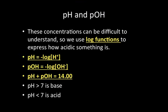Sometimes the large numbers and exponents can be difficult to understand — 1 × 10⁻² is actually greater than 1 × 10⁻⁵. So rather than using concentrations directly, we use log functions. pH (power of hydrogen) equals the negative log of H+ concentration. pOH equals the negative log of OH- concentration (power of hydroxide). pH + pOH always equals 14. If pH is greater than 7, the solution is a base; if pH is less than 7, it's an acid.